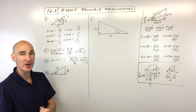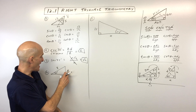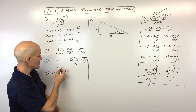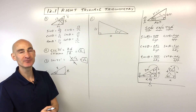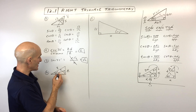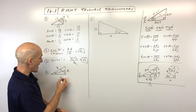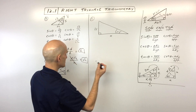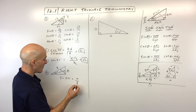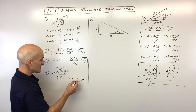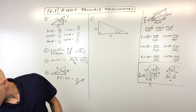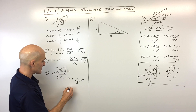For number 4, solving for the missing side X. We have a 20-degree angle, hypotenuse of 8, and opposite side X. That's opposite over hypotenuse — sine. So sine of 20 degrees equals X over 8. Multiply both sides by 8: X equals 8 times sine of 20, which comes out to about 2.74.